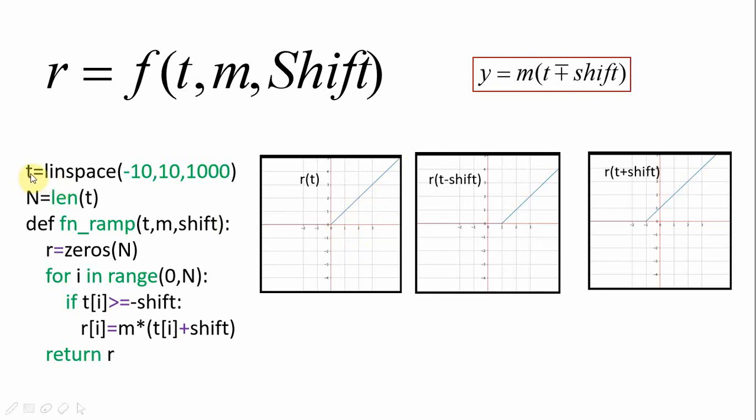Again as we did for the step signal continuous time, we define the x axis by means of this time t with linear spacing between the two limits. Here I have taken from minus 10 to plus 10 with 1000 points between them and the length of this array is given by length of t that is capital N.